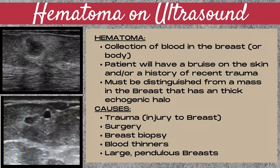The next superficial mass is a hematoma. A hematoma is a pocket of blood in the breast or in the body. These can be found anywhere in the body. The patient is going to have a bruise on the skin in most cases, and/or will have a history of a recent trauma.